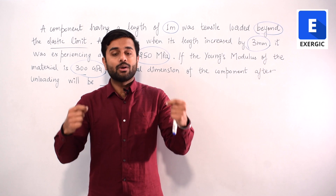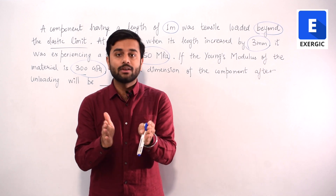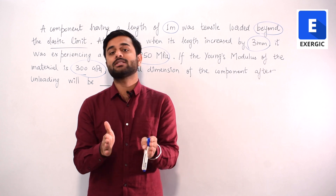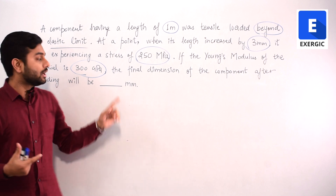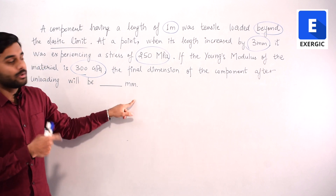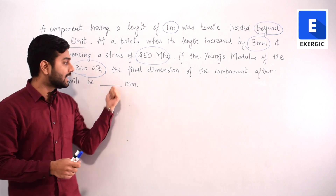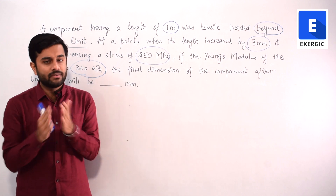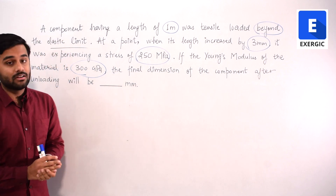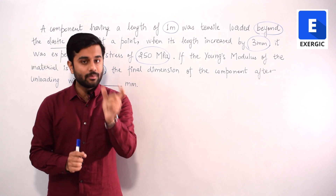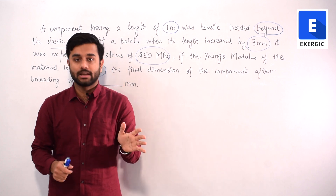When you unload from the plastic zone, the component will not regain its original dimension. So the final dimension after unloading cannot be 1000 mm — it will be more than 1000 mm, because there will be some permanent set and some permanent deformation in the material.